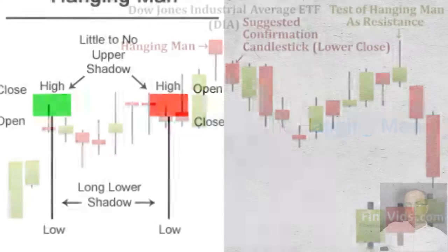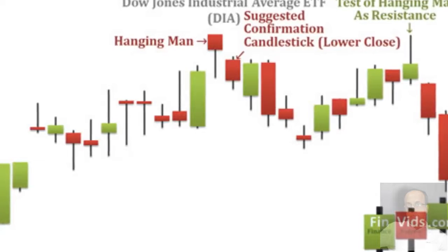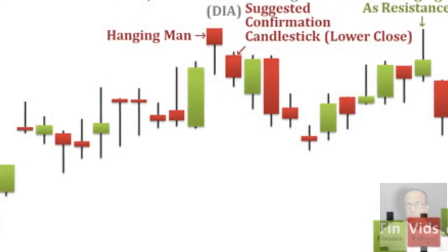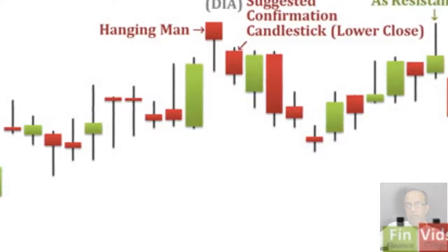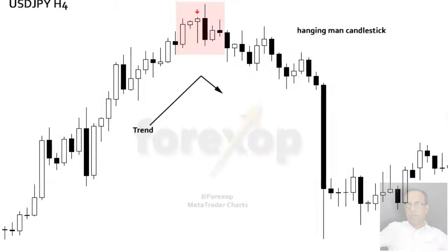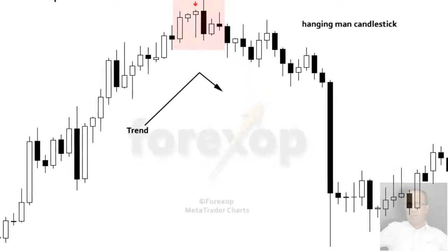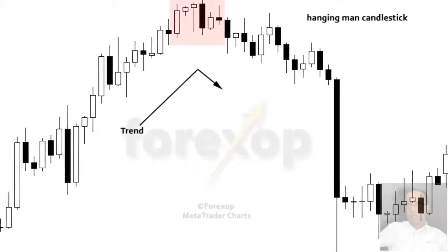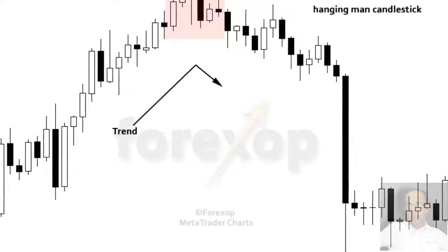The hanging man has a very long lower shadow, a small real body which can be white or black near the upper end of the trading range, and little or no upper shadow. This is the same shape as the hammer line. However, as expressed in the Japanese literature, if it appears from below, buy; and if it appears from above, sell. The same shape can be bullish or bearish depending on where it appears in a trend. If it appears during a decline it is a bullish hammer, but if it appears during an uptrend it is a sell signal referred to as a hanging man line.